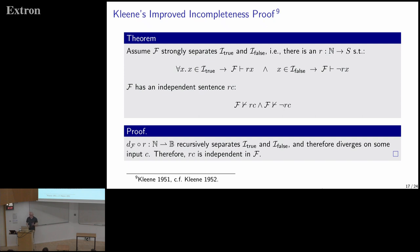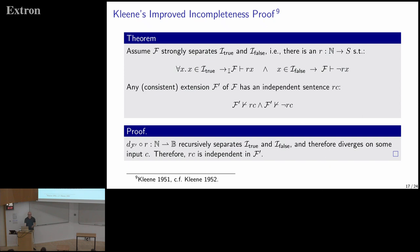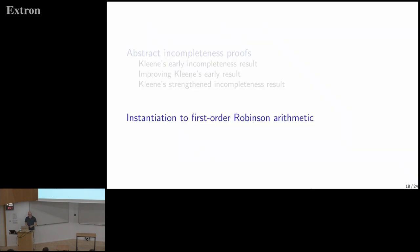Using this, we can show Kleene's improved incompleteness proof: if formal system f strongly separates I_true and I_false, then f must have an independent sentence. We show this by constructing a function that recursively separates I_true and I_false, which forces divergence, inducing an independent sentence. Moreover, all consistent extensions of f still strongly separate these predicates, giving essential incompleteness: any consistent extension of f has an independent sentence.